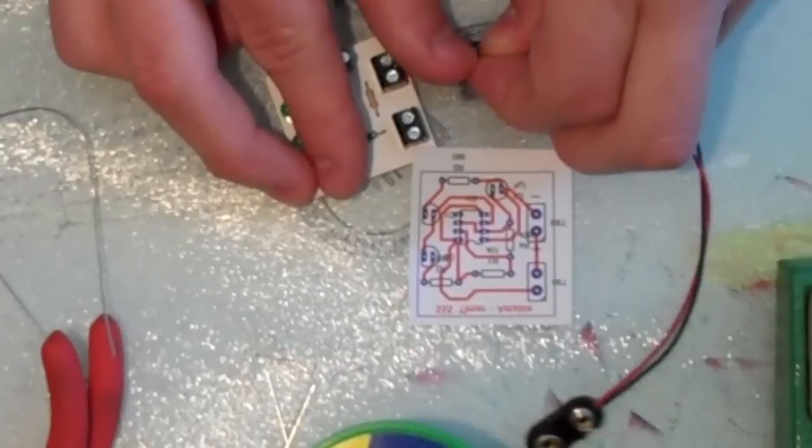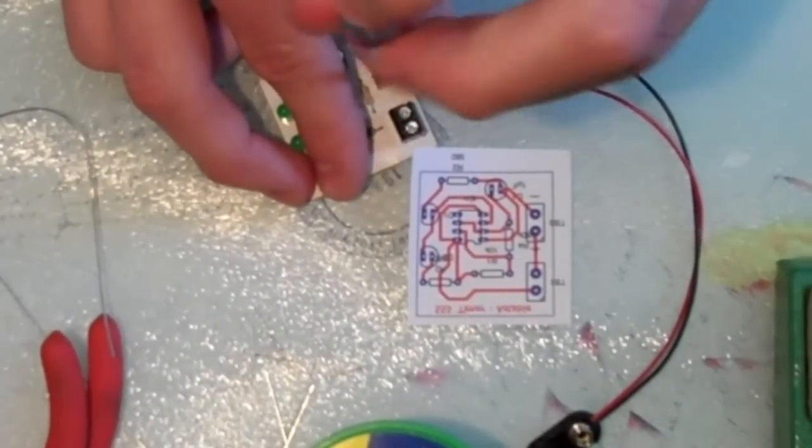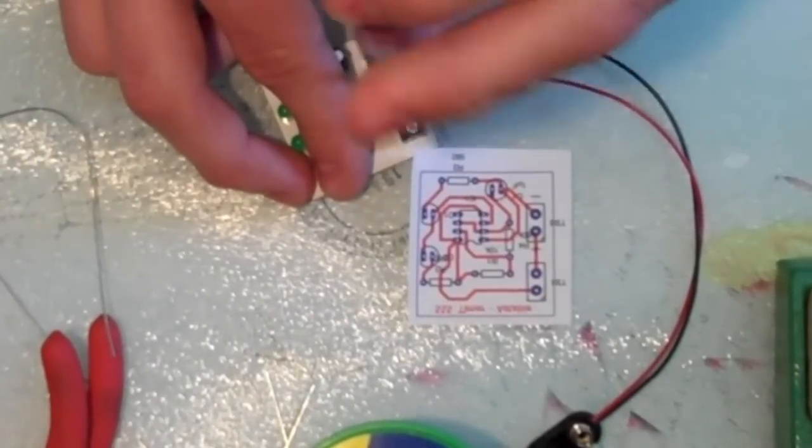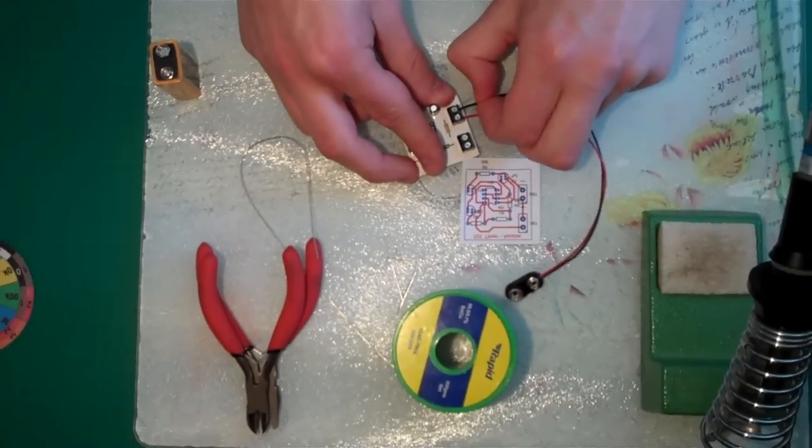And the red one. Tighten that one up. Just give them a little tug to make sure they won't come out.